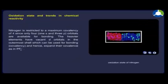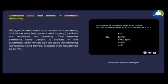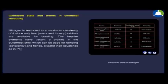Nitrogen is restricted to a maximum covalency of 4 since only 4 orbitals are available for bonding. The heavier elements have vacant d orbitals in the outer shell which can be used for bonding and hence expand their covalence as in PF₆²⁻.